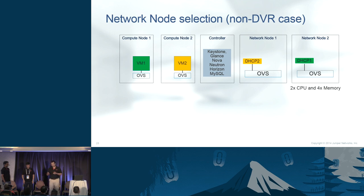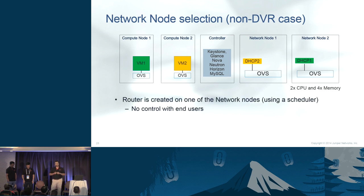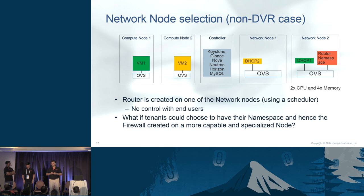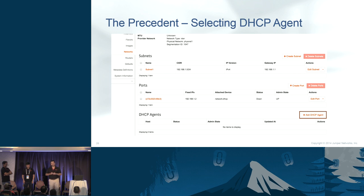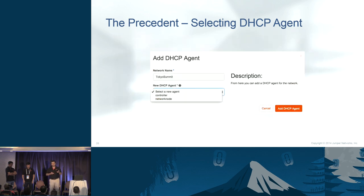When you create a router or firewall rule today, you don't get a choice of where that router lands — it could land on network node 1 which is less capable. What if tenants wanted to choose and pay for the ability to host their networking services on a more capable system? There is a precedent in OpenStack: you already have the ability to choose a DHCP agent — as an administrator you can attach a specific DHCP agent to a network for redundancy and performance benefits.